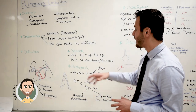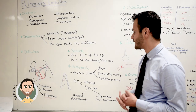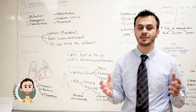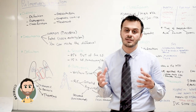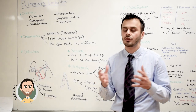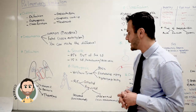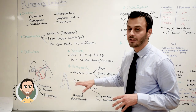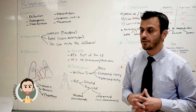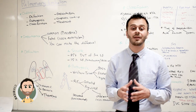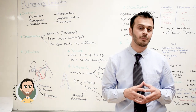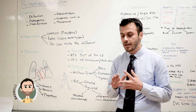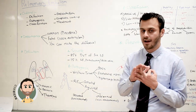Now, moving on to the pathogenesis of pulmonary embolism. We're basically talking about the pathogenesis of blood clot formation, and this is beautifully defined by the Virchow's triad — which describes the environment in which a blood clot is more likely to form, and is composed of three main factors.